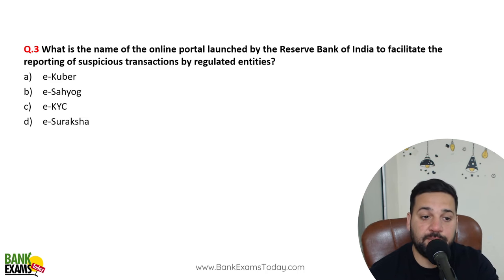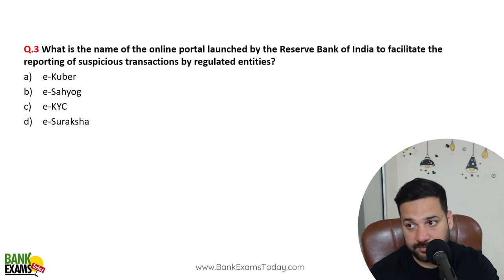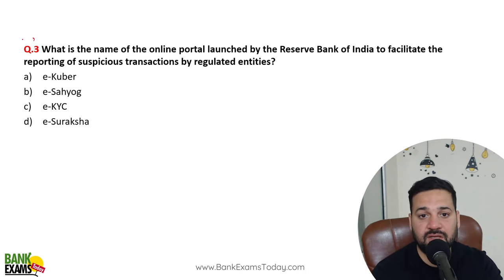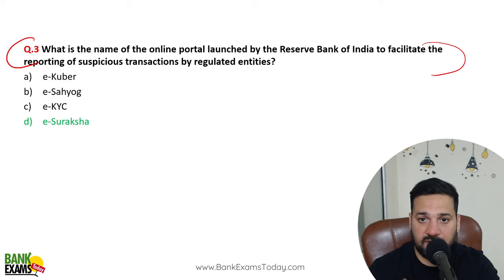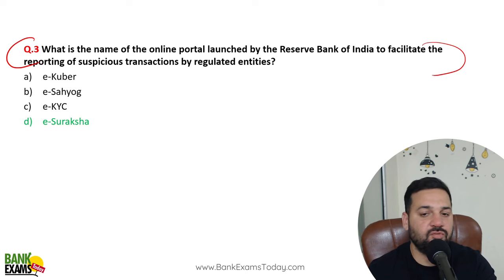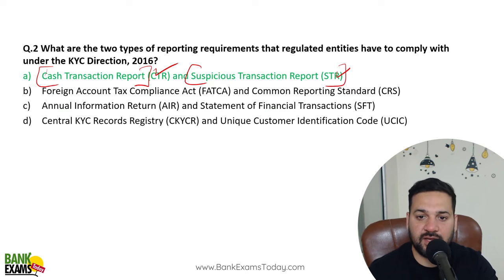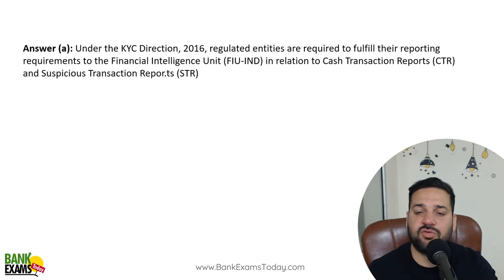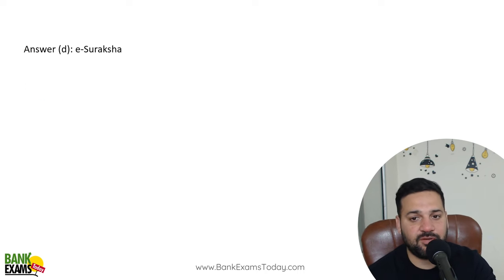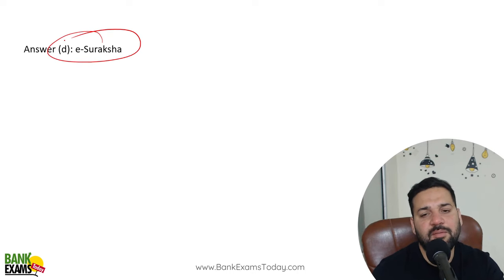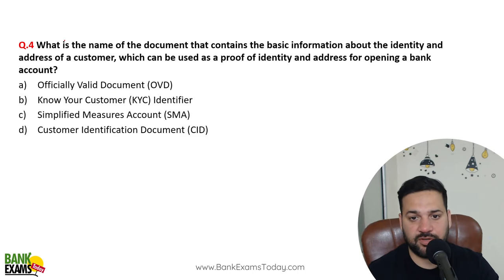What is the name of the online platform that RBI set up to facilitate reporting of suspicious transactions by regulated entities? The answer is the e-Suraksha portal, where regulated entities can file both the Cash Transaction Report and the Suspicious Transaction Report. E-Suraksha is the platform name — please remember this, as it has appeared in exams many times and is very important.